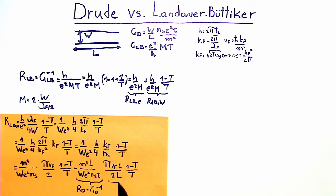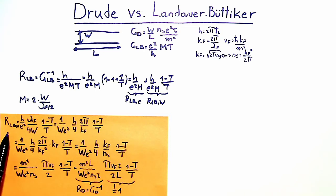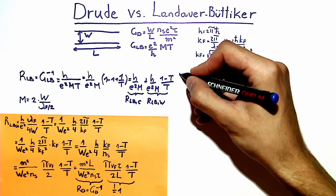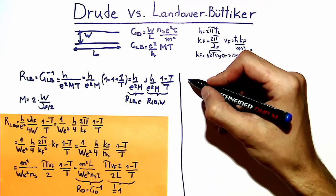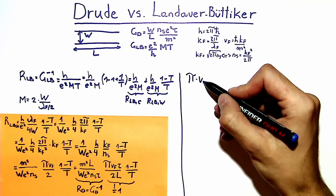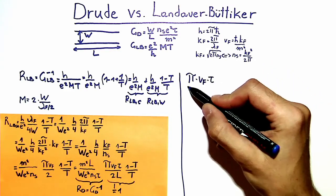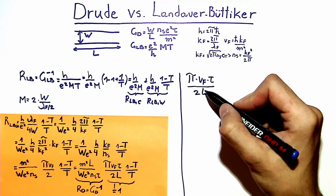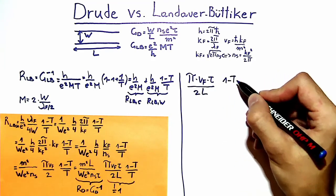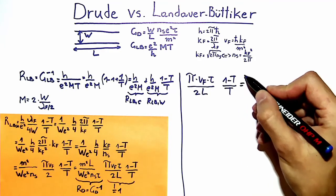We set this factor to 1 so that the wire resistance from the quantum mechanical Landauer-Büttiker model equals the resistance from the classical Drude model. This gives us: π times the Fermi velocity times the scattering time tau, divided by twice the wire length, multiplied by (1 − t)/t, equals 1.